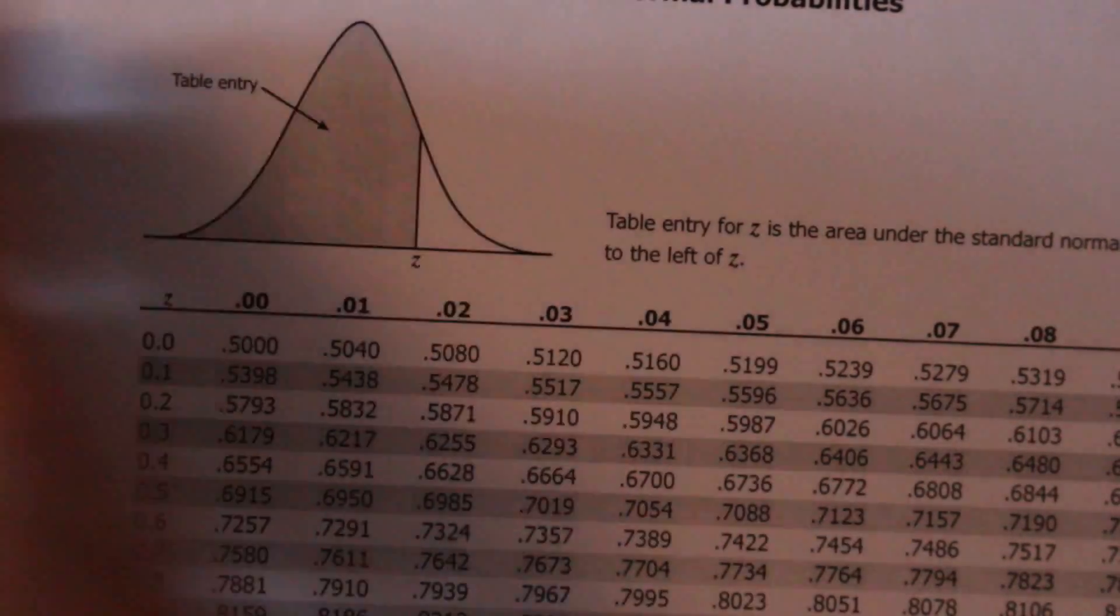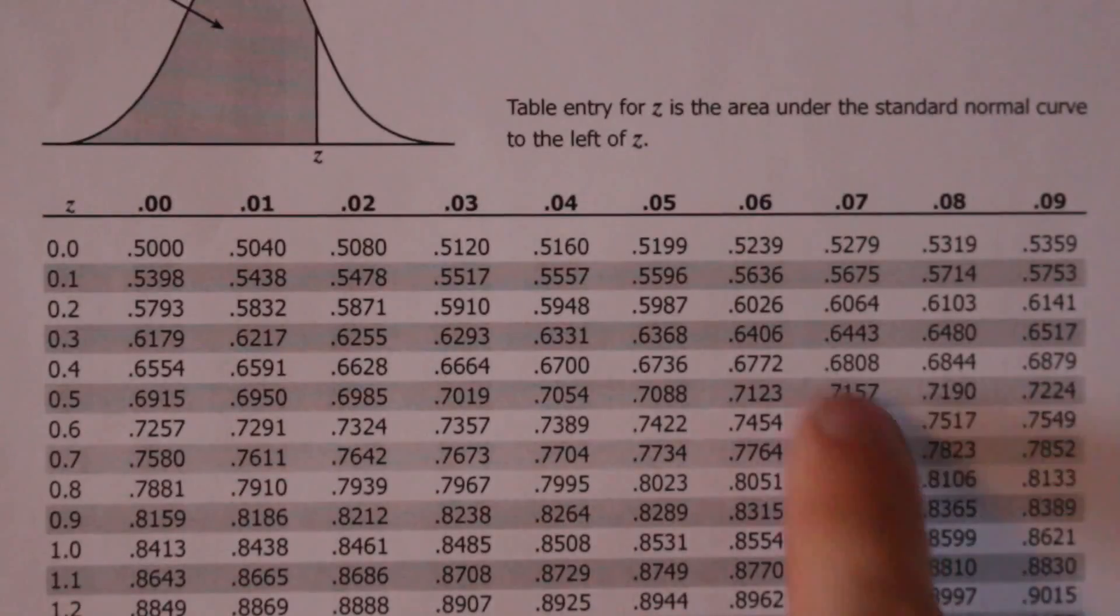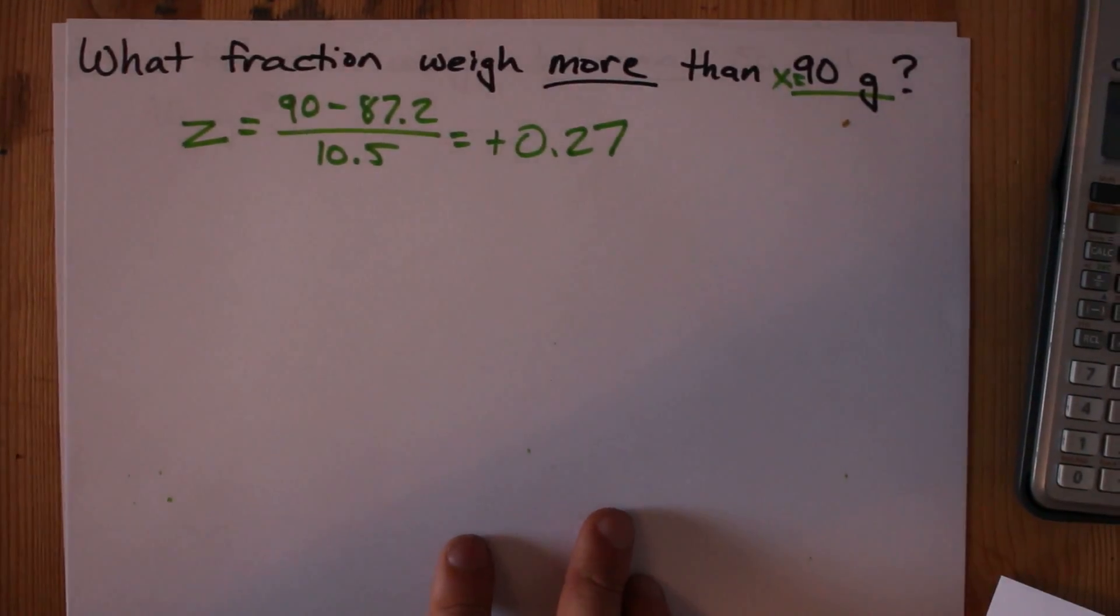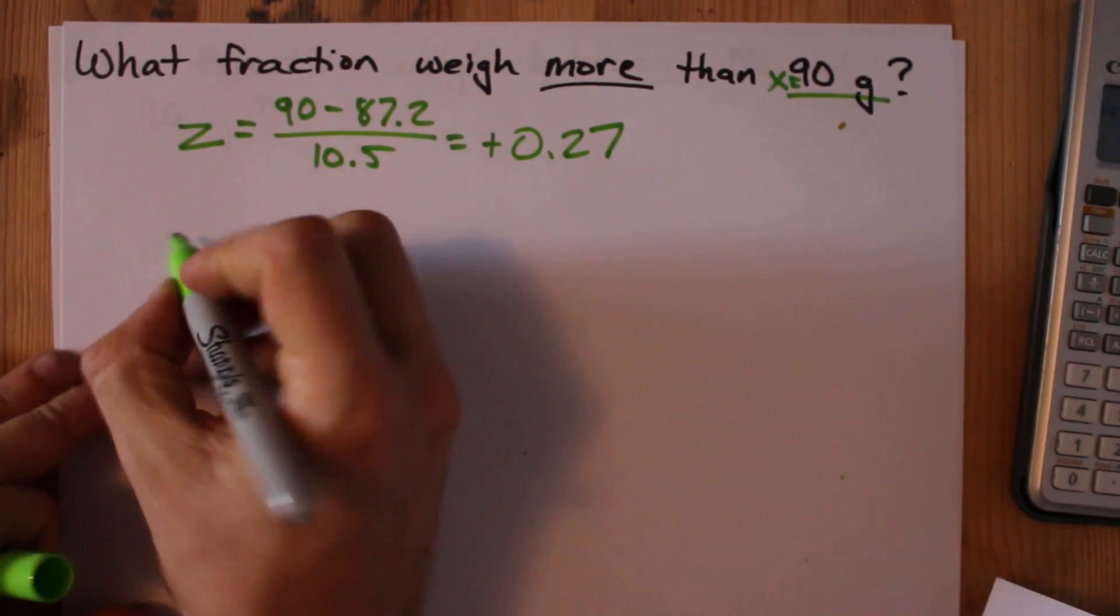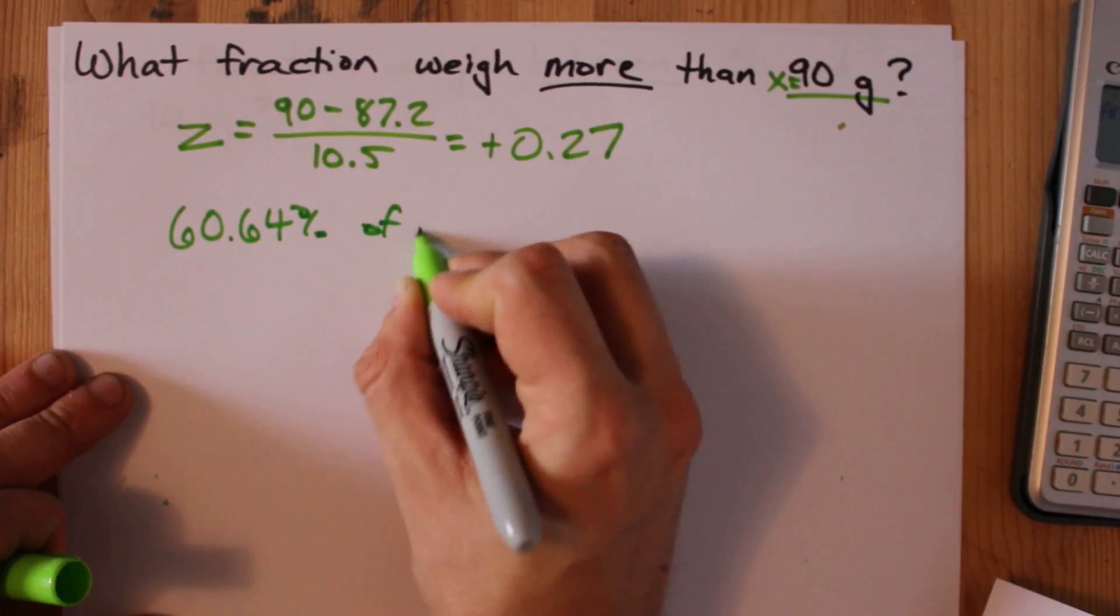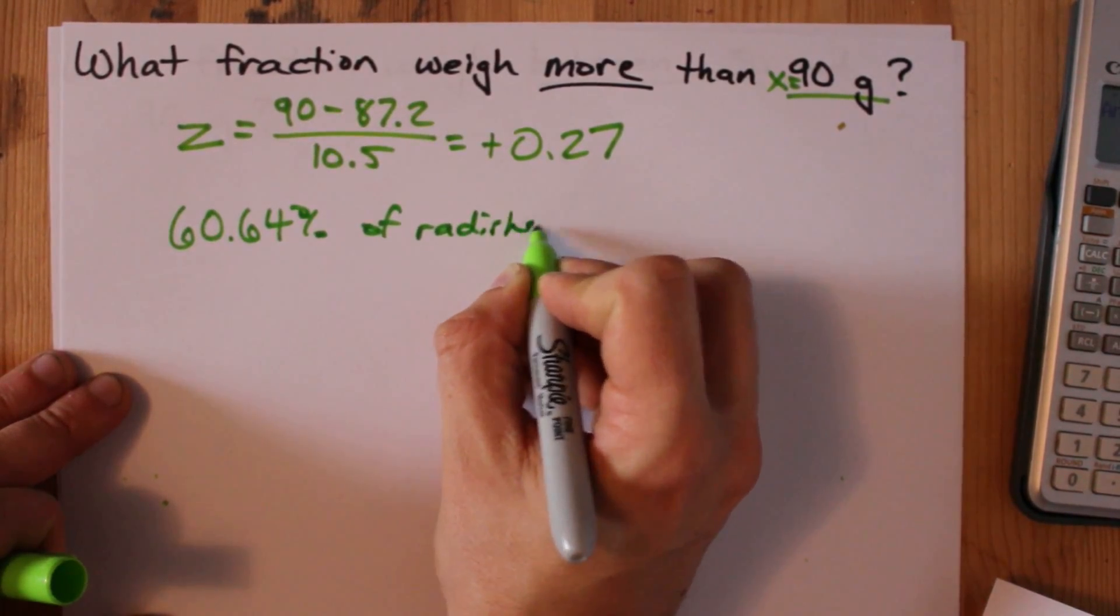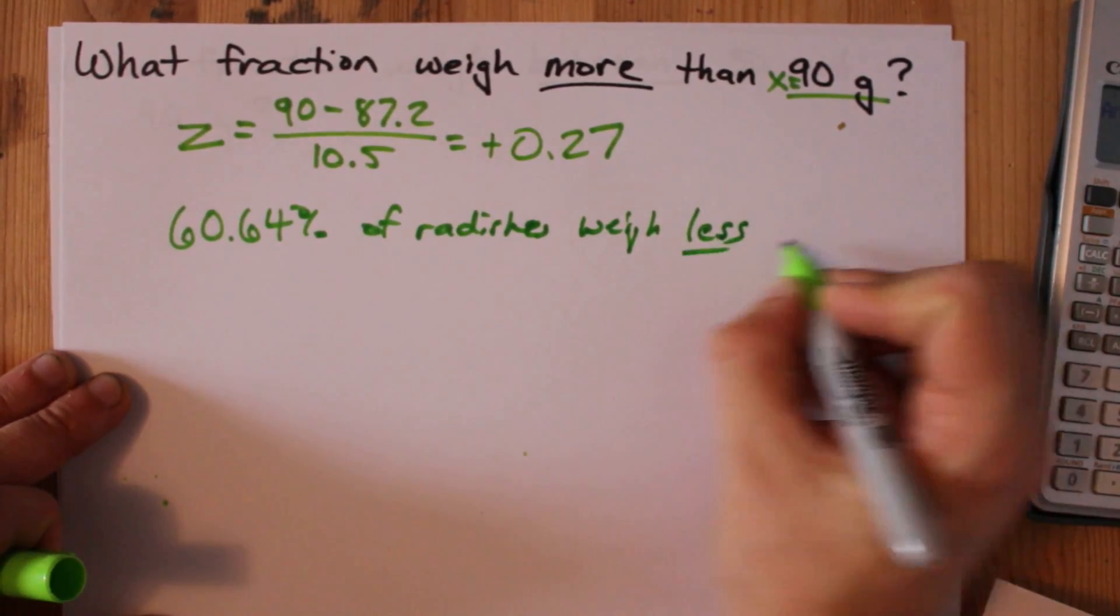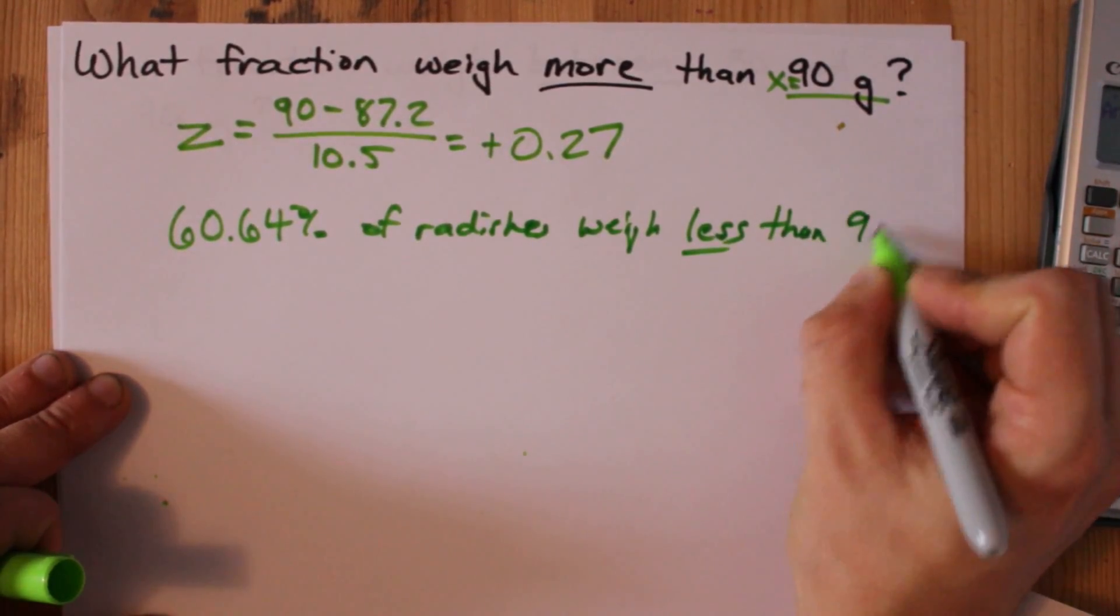These tables always give you less than. Let's write that down. 60.64% of radishes weigh less than 90 grams.